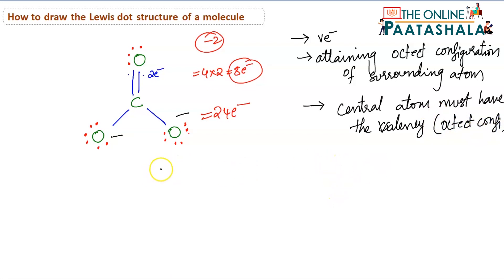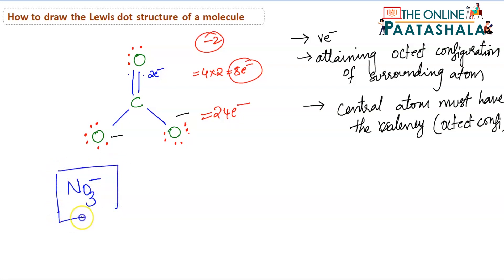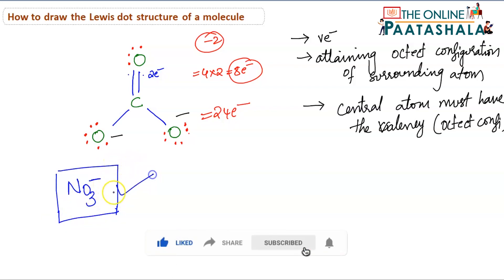Now I will give you a question to try. Draw the Lewis dot structure for NO₃⁻. Try to solve this question using the rules we discussed and draw the Lewis dot structure for NO₃⁻. Thank you.